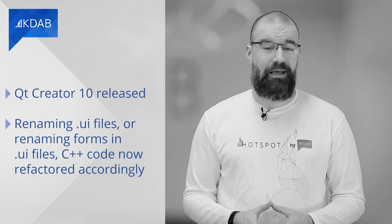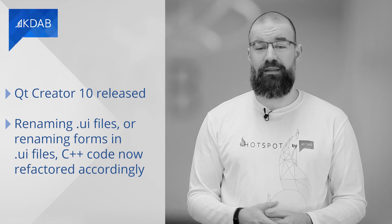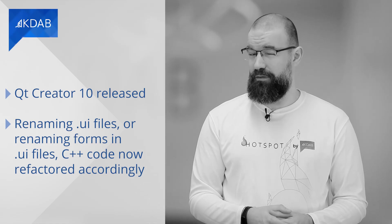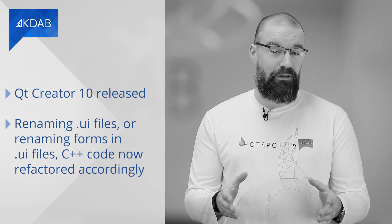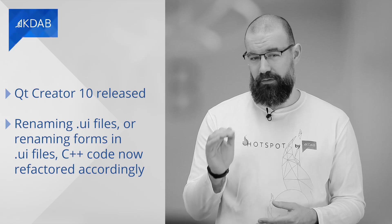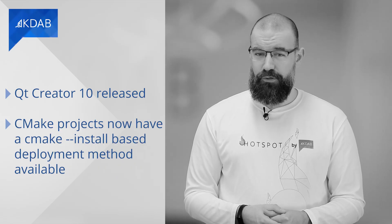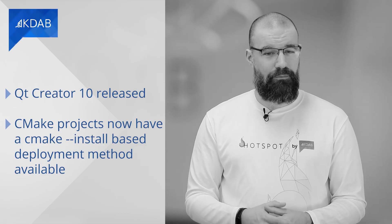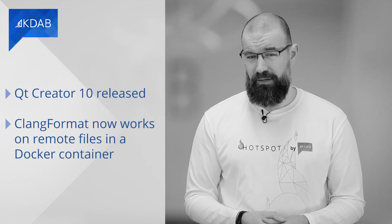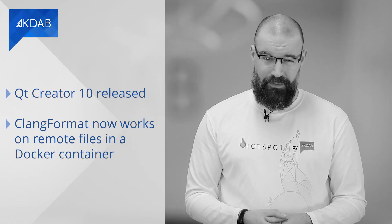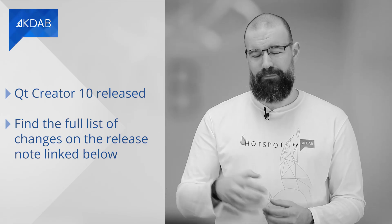The beta version of Qt Creator 10 has been released in the middle of February with a range of improvements in editing projects as well as remote build and run targets. For example, when renaming .ui files or renaming forms in .ui files, the C++ code is refactored accordingly. CMake projects now have a CMake-install based deployment method available, and Clang format now also works on remote files in a Docker container. You can find the full list of changes in the release notes linked below.